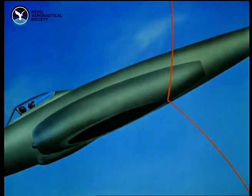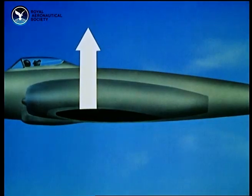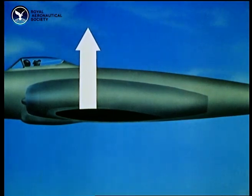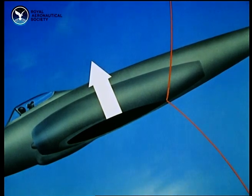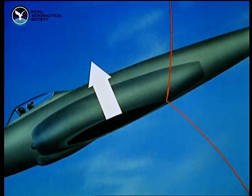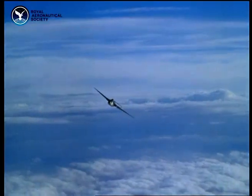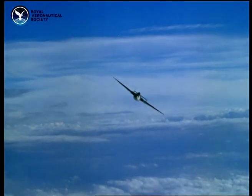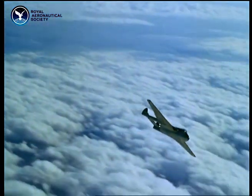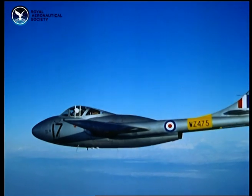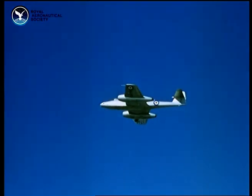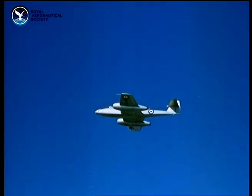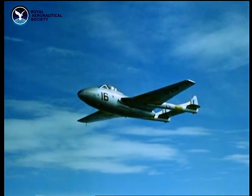Most aircraft don't do all of these things, but the centre of lift always shifts towards the rear when passing through the transonic range. So all aircraft suffer a final nose down trim change. Other kinds of instability can be caused by flow separation: wing dropping, porpoising, snaking, and Dutch roll — movements something like these.